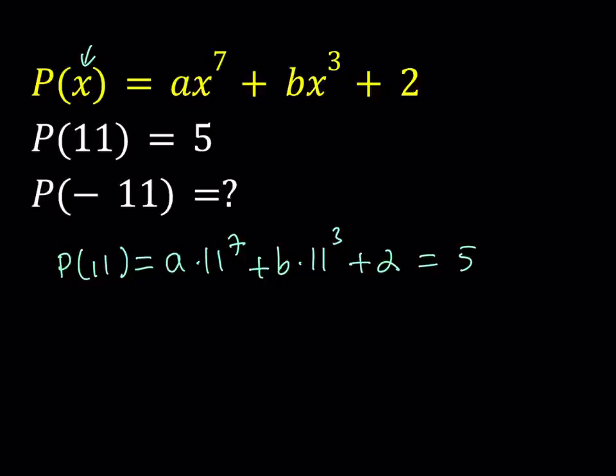You can go ahead and replace P of X with negative 11 and see what happens. So if you do, you're going to get A times negative 11 to the 7th power plus B times negative 11 to the 3rd power plus 2. And then that's what I'm trying to find. So this is what I'm looking for.